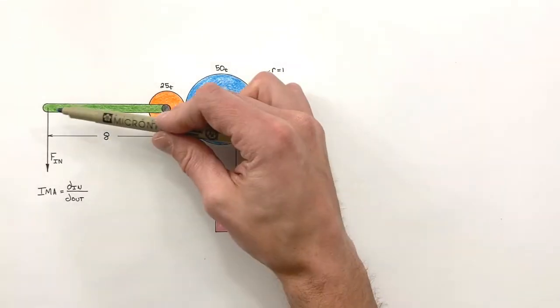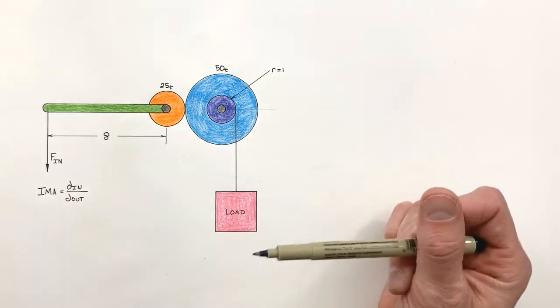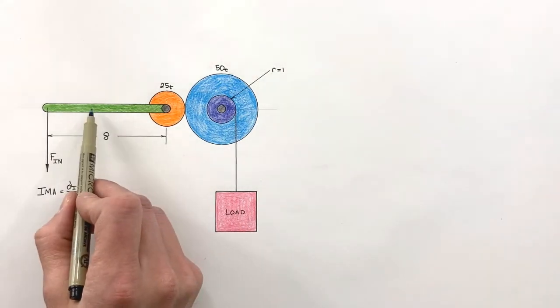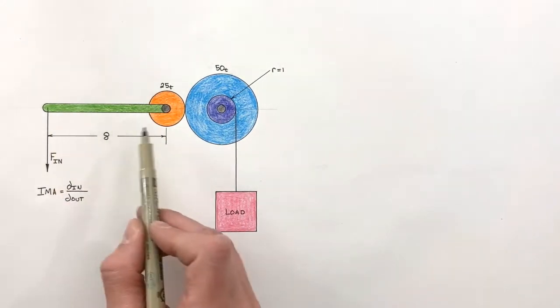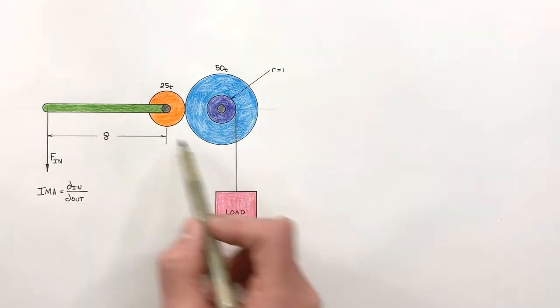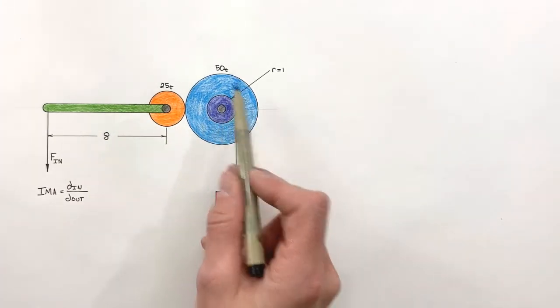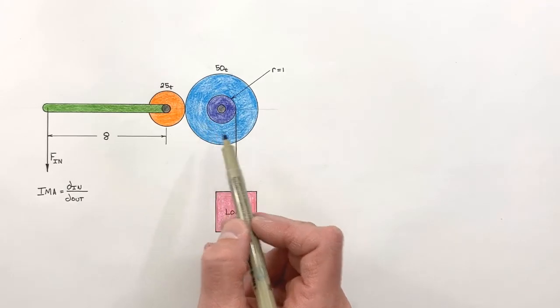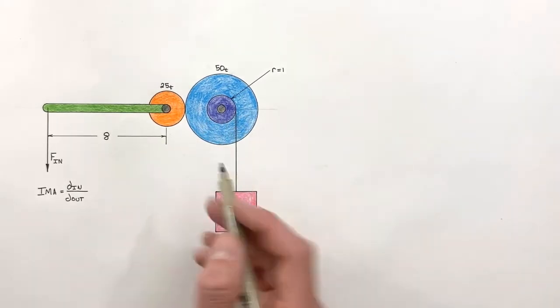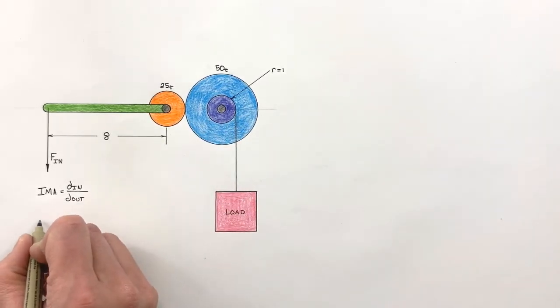Now here we have a compound machine with an input here and an output over here. Now rather than talking about a simple machine like a lever, let's talk about gears here. Now when dealing with gears, we talk about rotations as opposed to linear values, looking at gear ratio and how we define it.